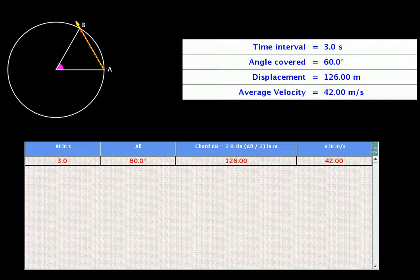We calculate the average velocity for the duration of 3 seconds as the chord length AB, which is 126 meters divided by the time of 3 seconds and get a value of 42 meters per second. This average velocity is along the chord and is shown as the yellow arrow. These values are also shown in the text area and in the first row of the table.